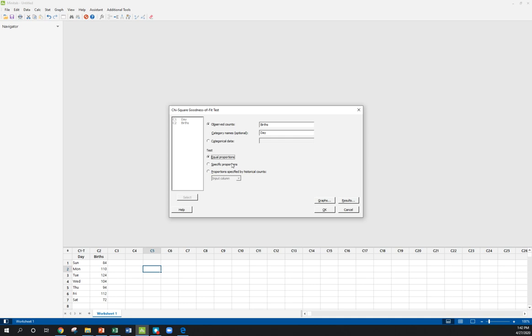Now here's where we've got to pay attention. We've got to think about what is our null hypothesis. Our null was that they are all equal, so we're going to choose this first option for equal.